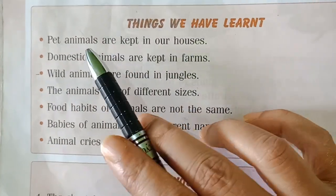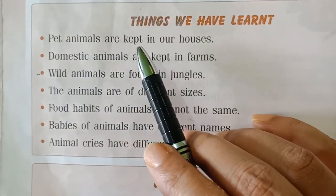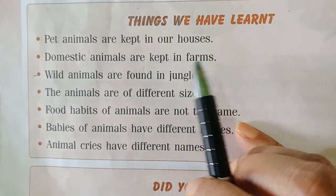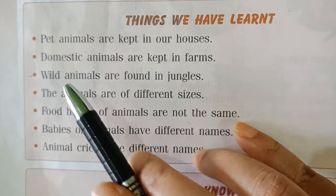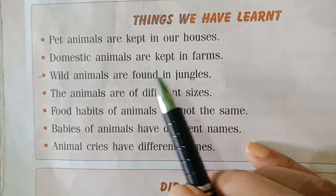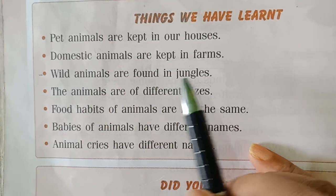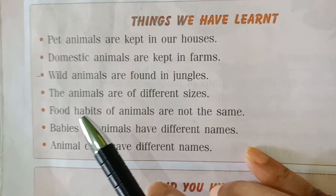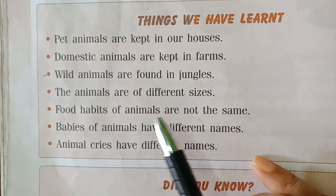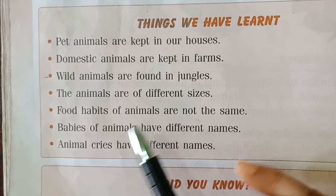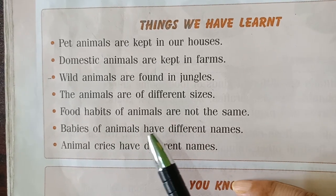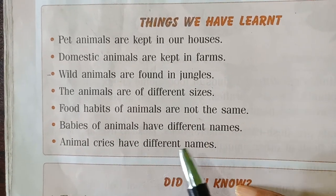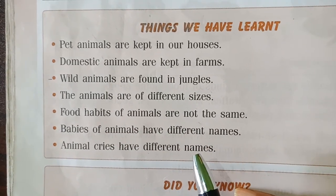Things we have learned: Pet animals are kept in our houses. Domestic animals are kept in farms. Wild animals are found in jungles. Animals are of different sizes. Food habits of animals are not the same. Babies of animals have different names. Animal cries have different names.